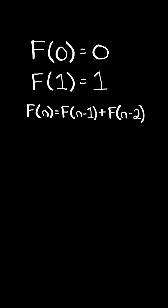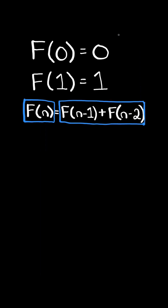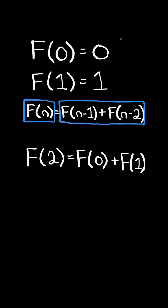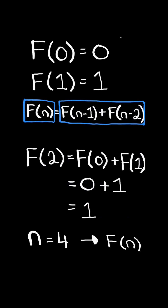Consider the Fibonacci sequence. To calculate the nth number in the Fibonacci sequence, it equals the sum of the previous two numbers in the sequence. For example, to calculate the second number in the sequence, it equals the sum of the zeroth number plus the first number in the sequence, and so the second number equals 1. Given an integer n, return the nth Fibonacci number.